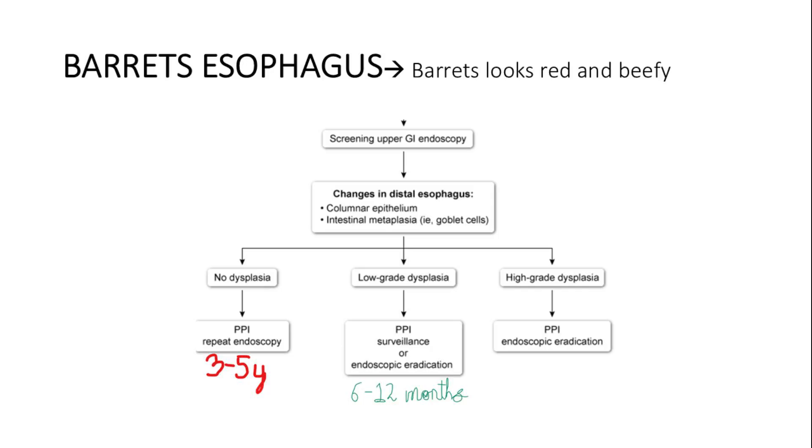If there's high-grade dysplasia, the recommendation is PPI and endoscopic eradication.